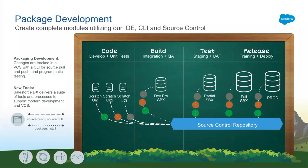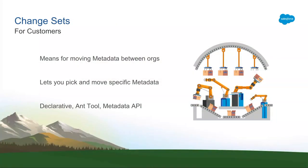As you start looking at release management, you start leveraging some of the metadata API commands, which are packaged under the package installation commands. So you start creating packages and installing them within each of these environments. For org development, the vehicle for moving changes are change sets. Change sets help you move specific metadata between orgs. There's not a notion of a package, but you're trying to move specific metadata files between orgs. There are several ways to do that — declarative ways such as the change sets UI, but also programmatic ways such as the Ant migration tool and the metadata API itself.